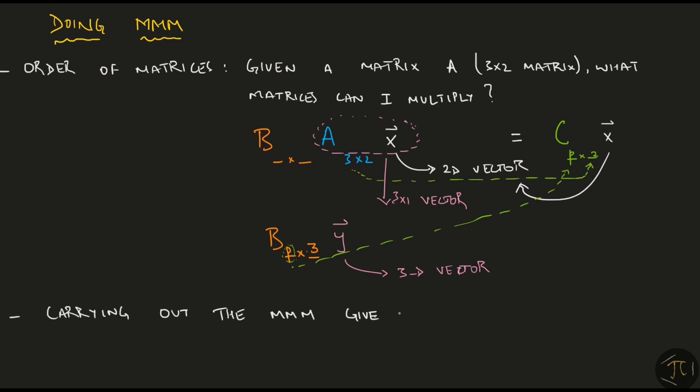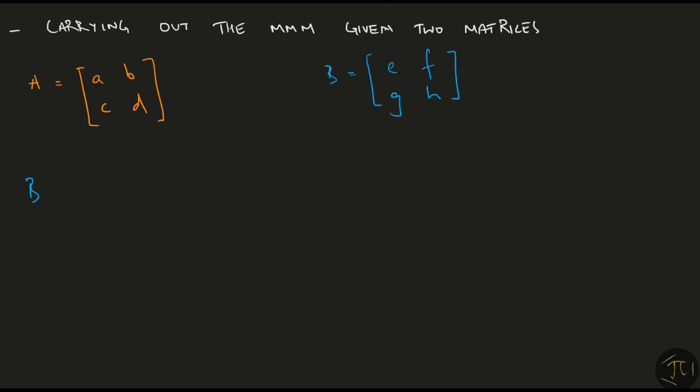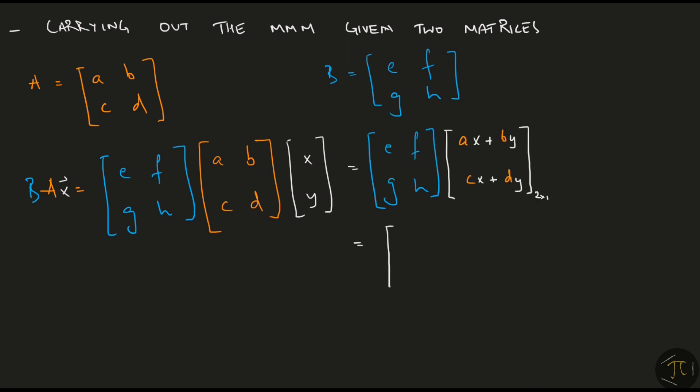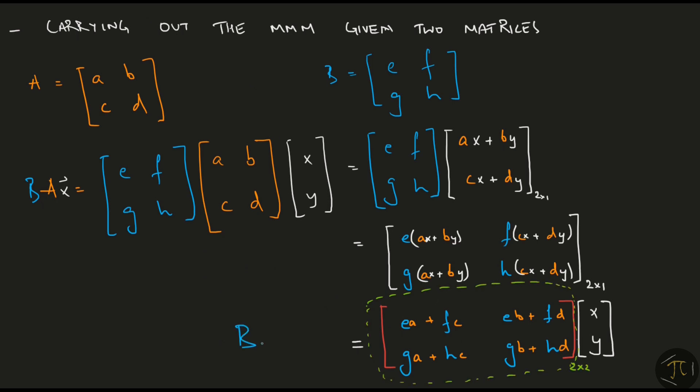Now let's look at the mechanism of carrying out the MMM given two simple matrices. Again, we introduce a dummy vector to figure this out. First, we take the product of matrix A and vector x, and then we take the product of the matrix B with this resulting 2x1 vector. Now here is the trick. We split this 2x1 vector as a product of a matrix and vector. Comparing this to BAx, we can conclude that this green thing here is a 2x2 matrix, which is indeed B times A. I just showed you how to interpret the product of two matrices, but this is not the most efficient way of carrying out the multiplication.